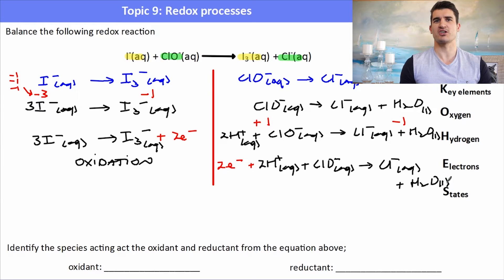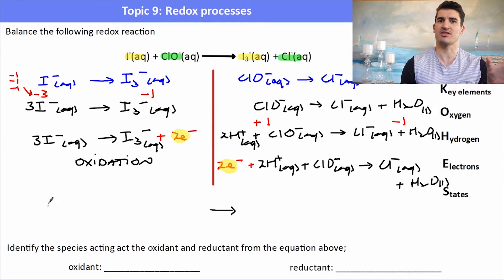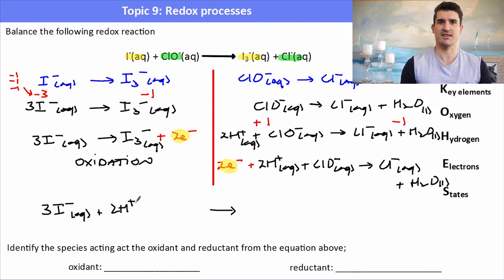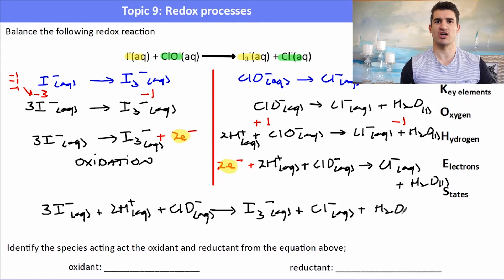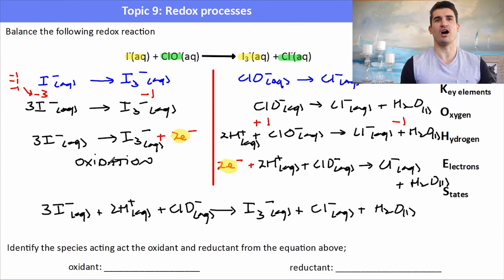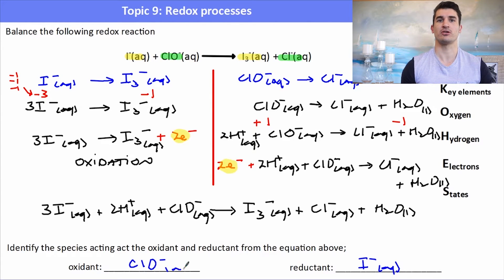The oxidation reaction loses 2 electrons and the reduction gains 2 electrons — they're nicely balanced so no multiplying is needed. We simply combine the two equations, keeping reactants on the left and products on the right, to get the overall balanced redox reaction. Remember to write the states — if you don't you'll often lose the mark. The reductant is I- (which undergoes oxidation) and the oxidant is ClO- (which undergoes reduction). The oxidant and reductant are always on the reactant side.